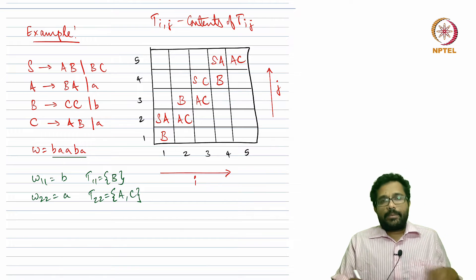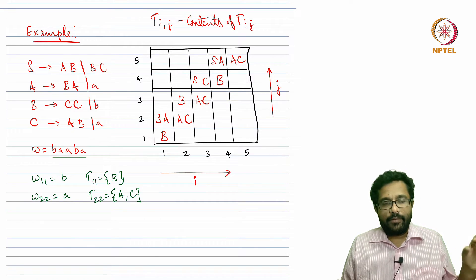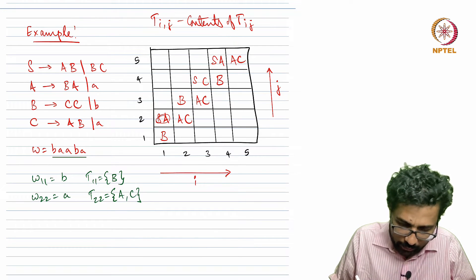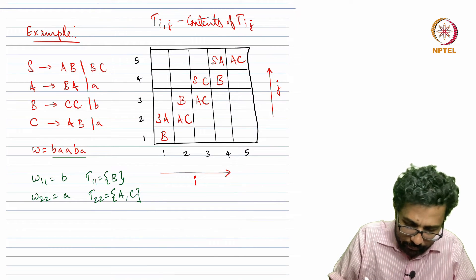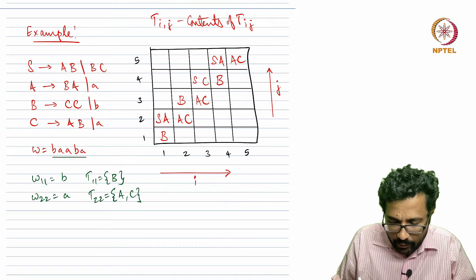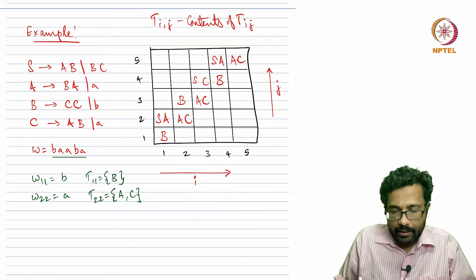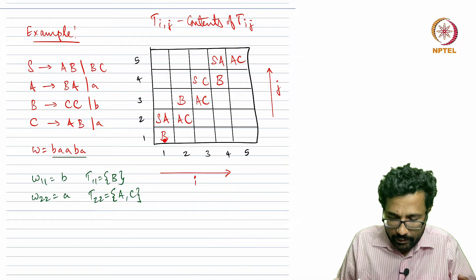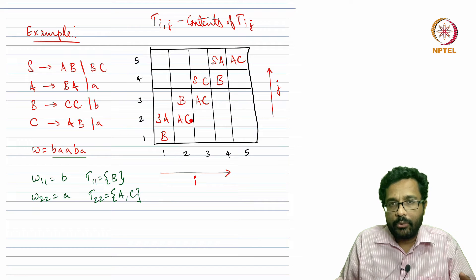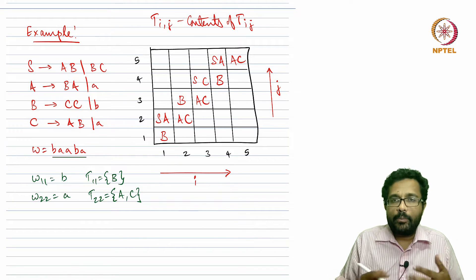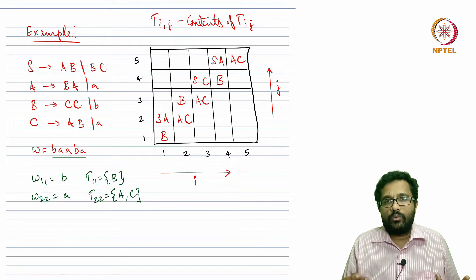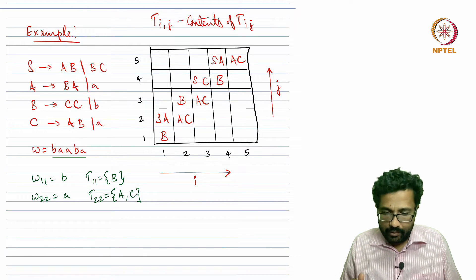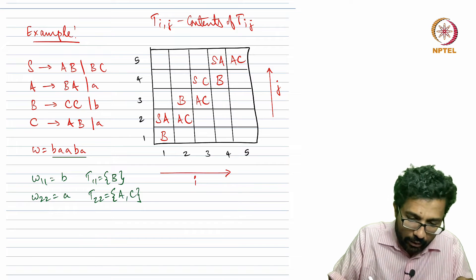For substrings of length 2 there was only one way to split. Looking at cell T[1,2], one variable generates two other variables — the first gives rise to T[1,1] and the second to T[2,2]. There is no other way to break a string of length 2, because empty strings are not permitted.